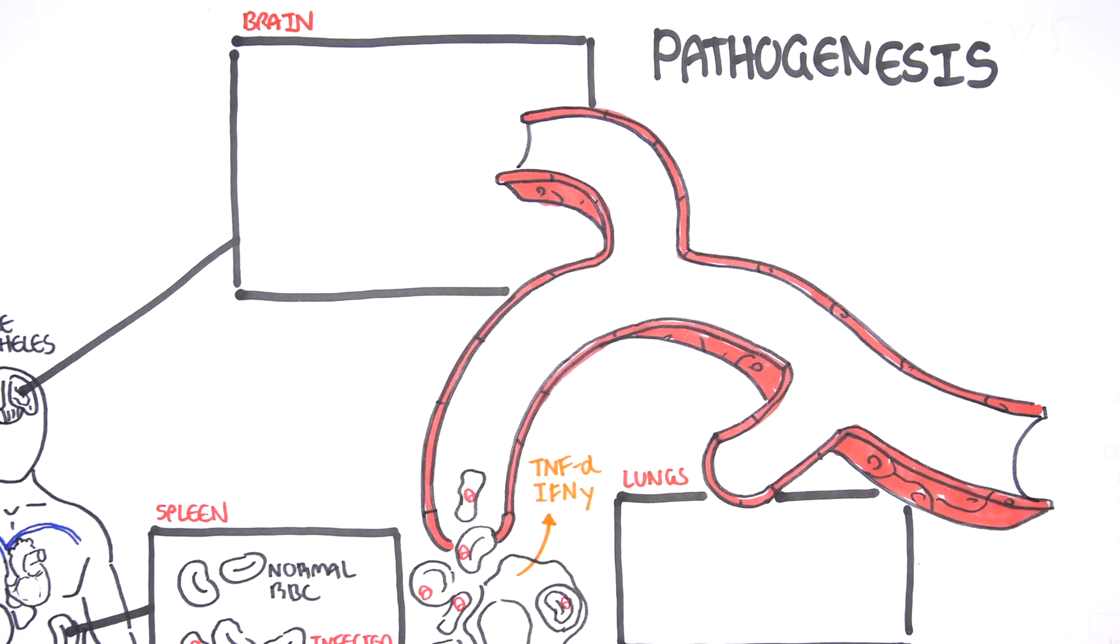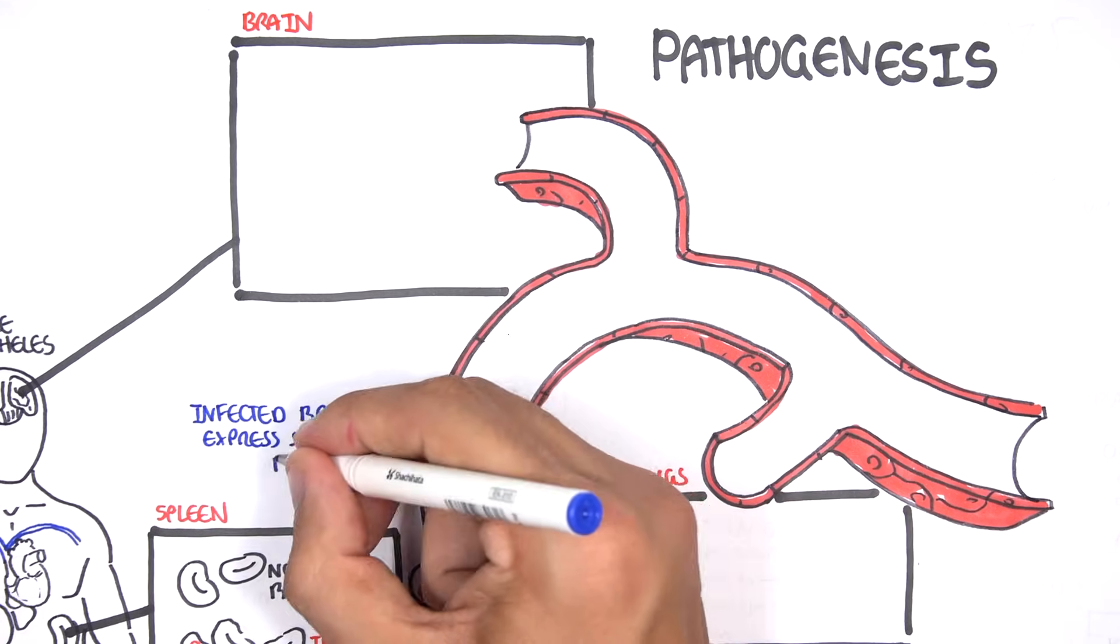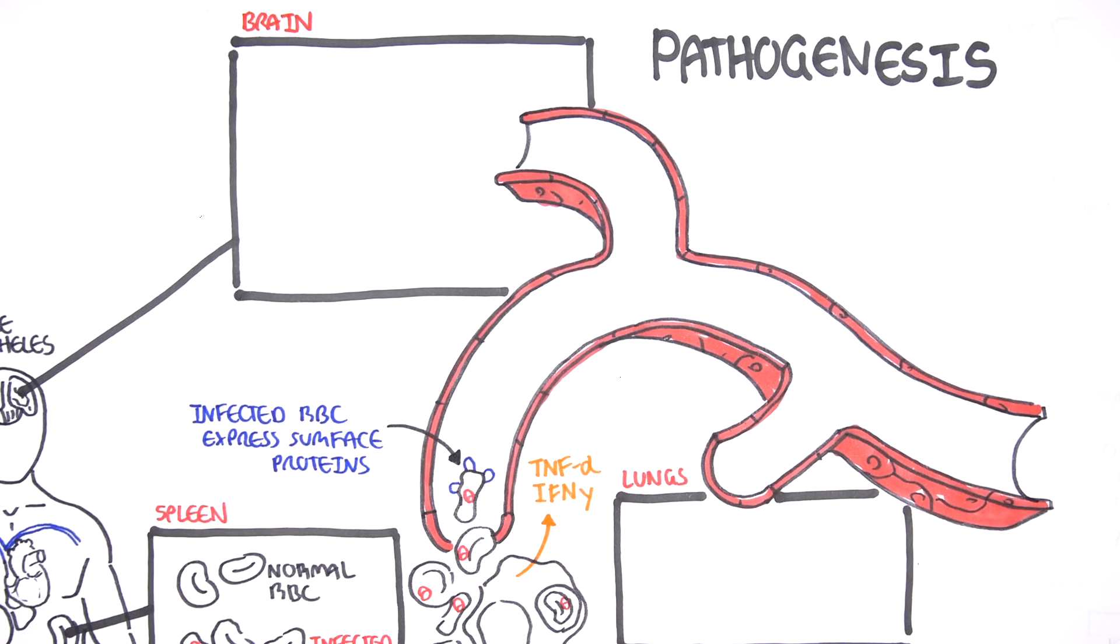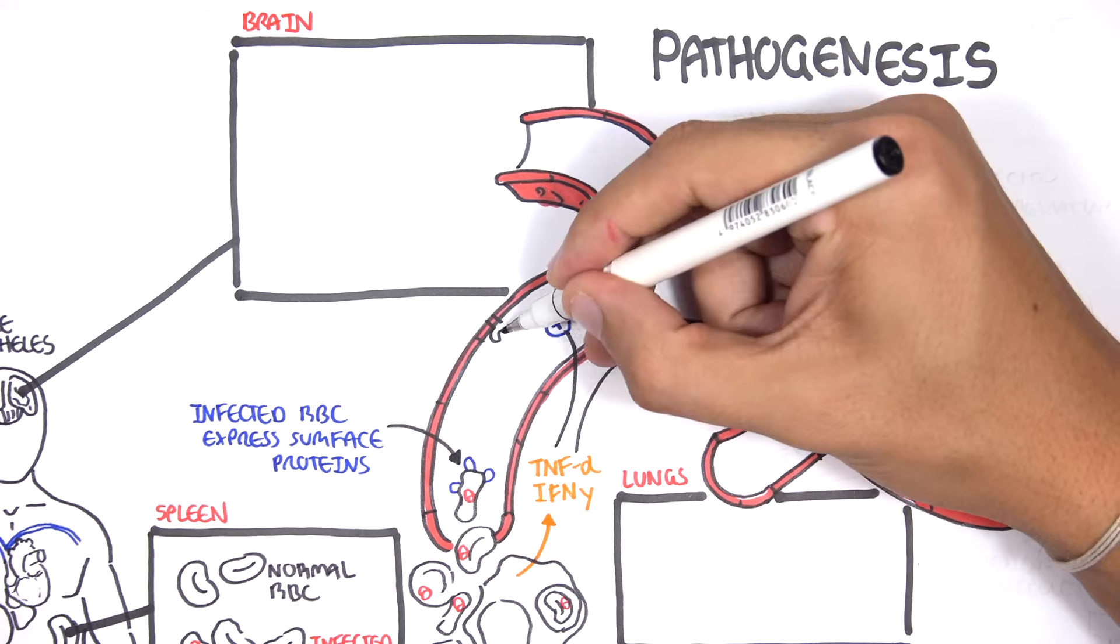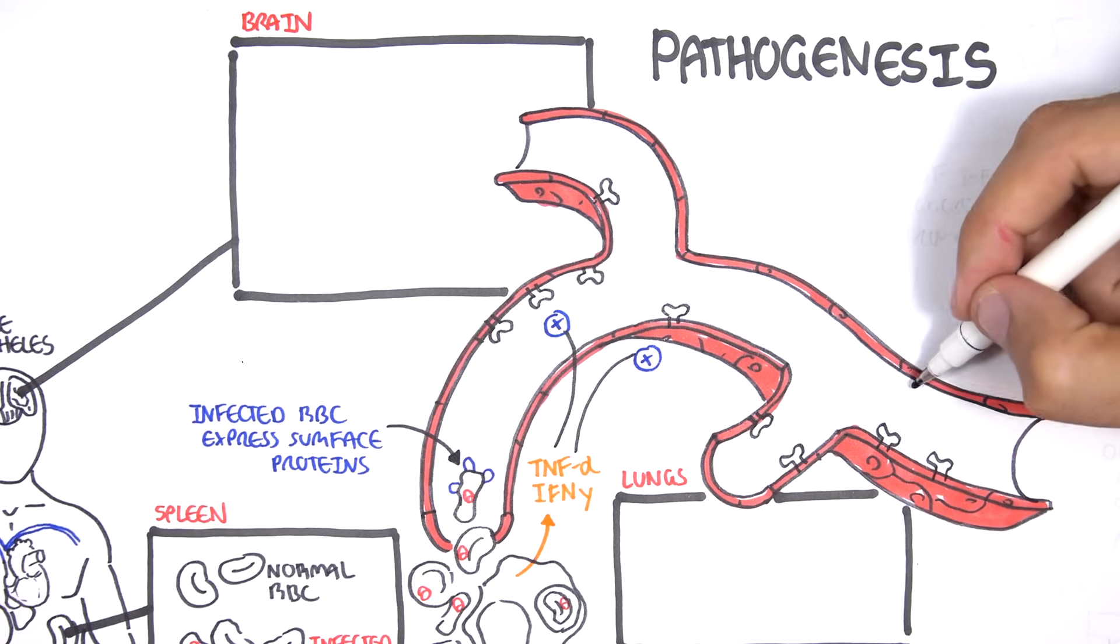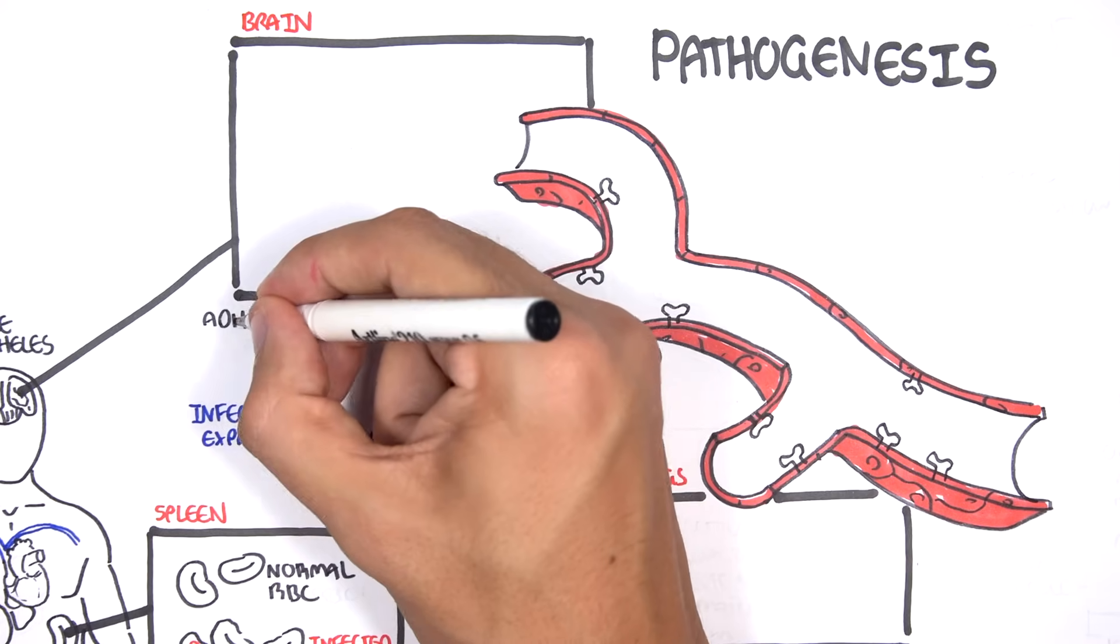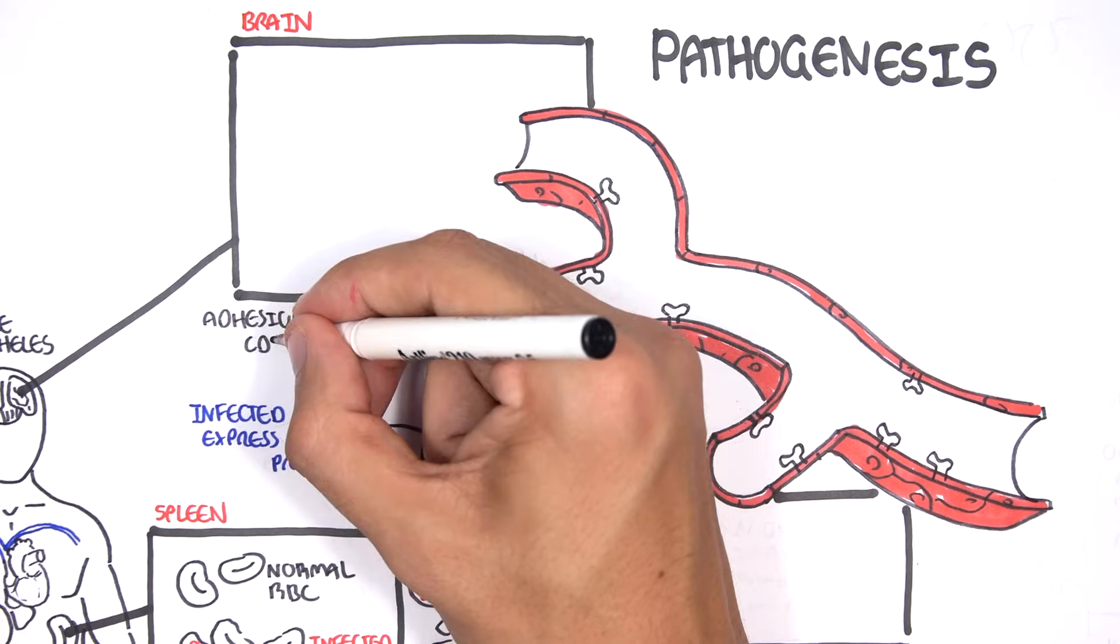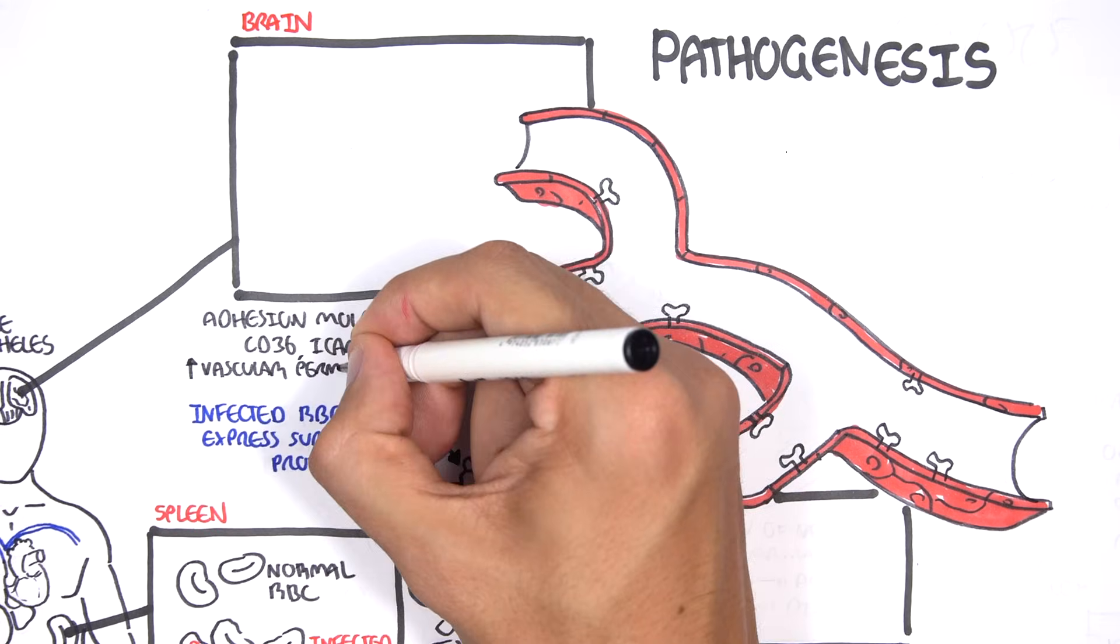So it's important to know that the parasite, when it infects red blood cells, it actually causes the red blood cells to express a surface protein. The TNF-alpha and interferon gamma, released by monocytes or macrophages, actually increases the expression of adhesion molecules by endothelial cells for these surface proteins. So these adhesion molecules on endothelial cells include CD36 and ICAM-1, amongst many others.